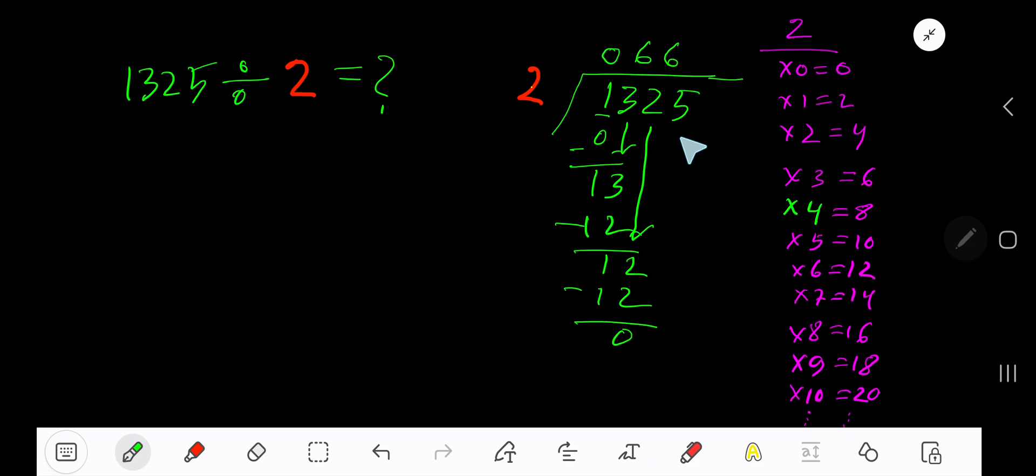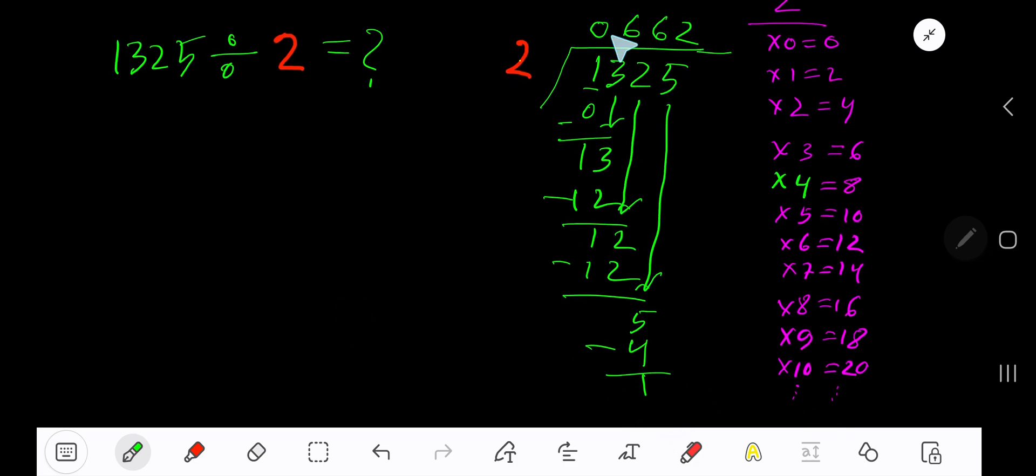2 goes into 5 how many times? 3 times 6, which is greater, so 2 times. 2 times 2 is 4, subtract, 1. So our answer is 662 remainder 1.